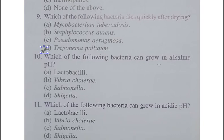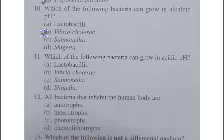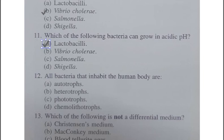Question number ten: Which of the following bacteria can grow in alkaline pH? A: Lactobacilli, B: Vibrio cholerae, C: Salmonella, D: Shigella. Question number eleven: Which of the following bacteria can grow in acidic pH? Options are the same. The correct option for question eleven is A, Lactobacilli. Lactobacilli, prominent in the human vagina, can grow in acidic pH. It is also the organism responsible for the curdling of milk, the conversion of milk to curd.